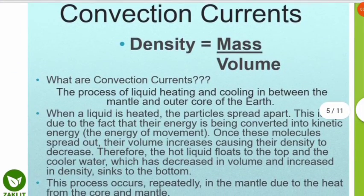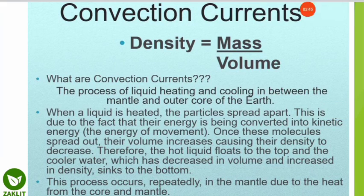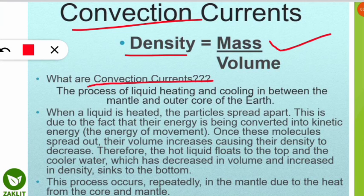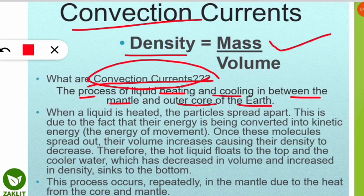Now let's move to the important part related to this topic — convection currents. Convection involves flow within a liquid. We also know that density equals mass divided by volume. The process of liquid heating and cooling between the mantle and the outer core of the earth is known as a convection current. This phenomenon occurs between the outer core and the mantle.